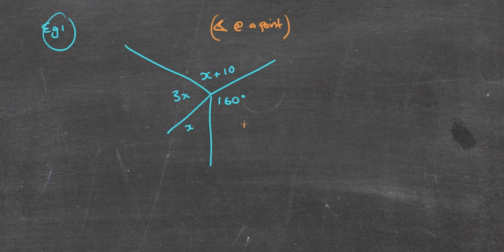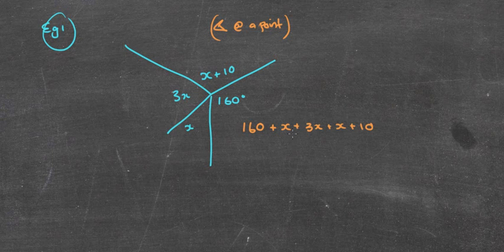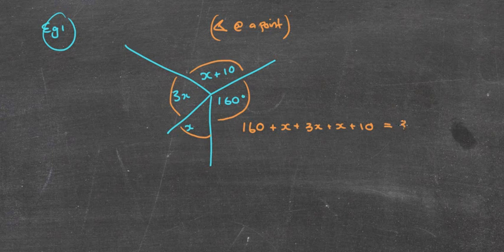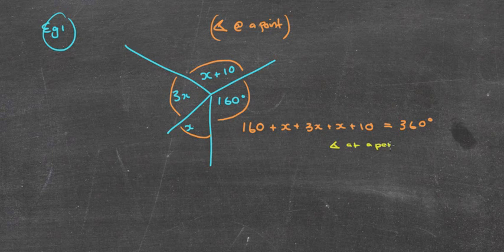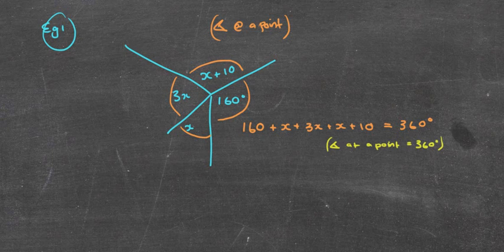I'm going to start with 160. You can start with any of the angles. But I'm now going to add each of the other angles together. Now, a lot of them look very challenging, but I've simply said 160 plus x plus 3x plus x plus 10. We know that they all plus together to give 360 degrees. Remembering that you must put your reasoning there, angles at a point, which is probably enough. But I'm going to also put equals 360 degrees just to be absolutely perfect there.